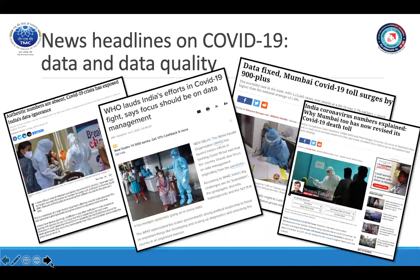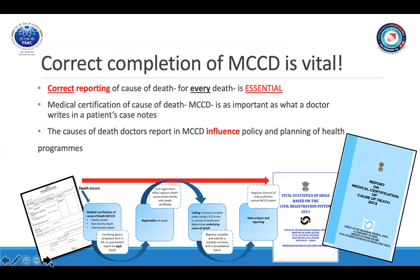The importance of good quality data on COVID-19 deaths is a topic in the media as well. Everyone — the public, the lawmakers, and the program managers — want to have access to complete and accurate data on COVID-19 cases and deaths. The cause of death information doctors report on MCCD forms has broad importance, which is why doctors should report causes of death carefully for each death and complete all required fields in the necessary form — Form 4, Form 4A, or the post-mortem form — with correct information. Remember, correct reporting of cause of death for every death is essential.